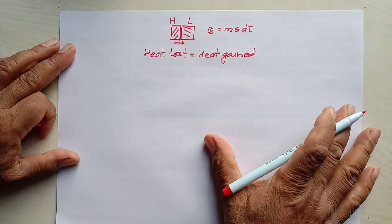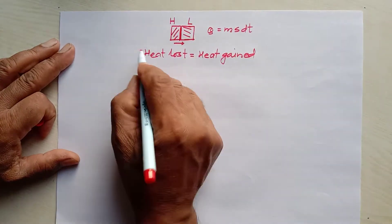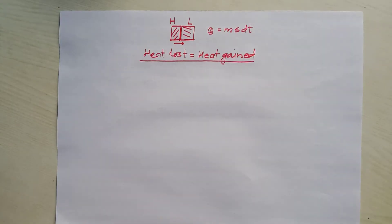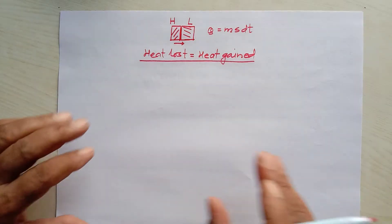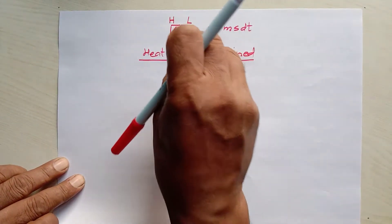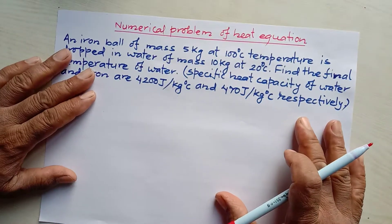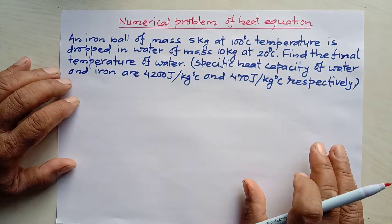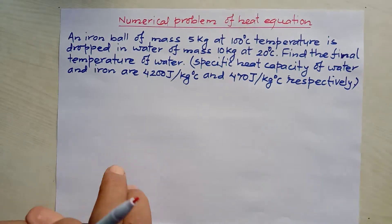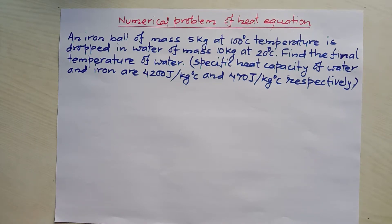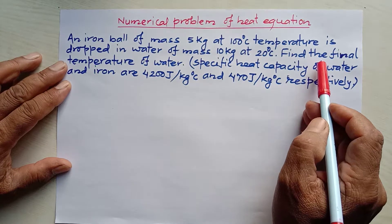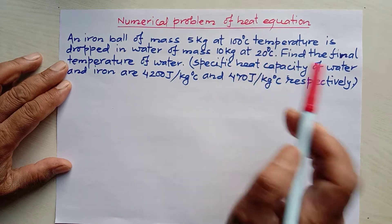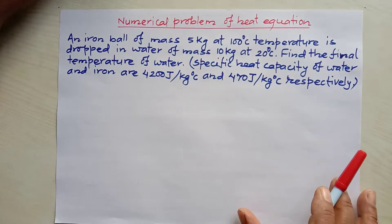Heat lost equals heat gained. Now, with this theoretical background, we can solve the numerical problem. An iron ball of mass 5 kg at 100°C is dropped into water of mass 10 kg at 20°C. We need to find the final temperature of the water. The specific heat capacities of water and iron are also given.